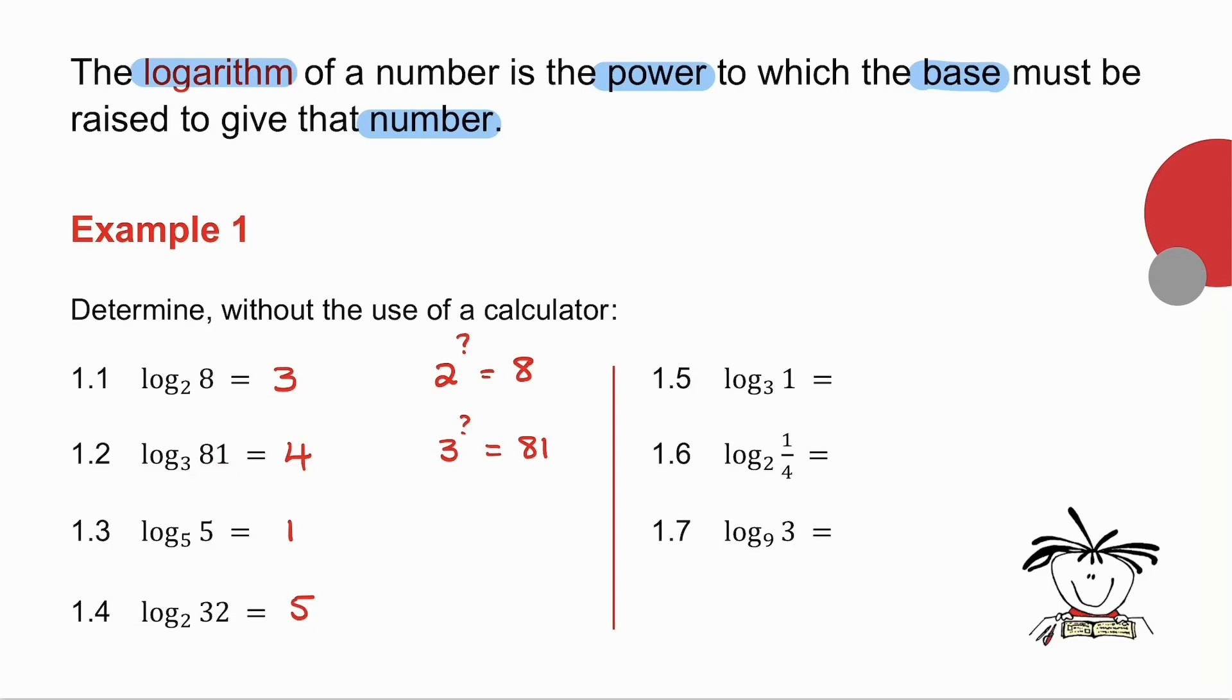So if I go to 1.5, 3 to the power what is 1. Well it must be 3 to the 0. 1.6, 2 to the power what gives me 1.5. Well I know 2 squared is 4, so if I need 1.5, it must be 2 to the minus 2. In 1.7, 9 to the power what gives me 3. Well the square root of 9 is 3, and in exponents the square root is to the power 1.5, so 9 to the half is equal to 3.